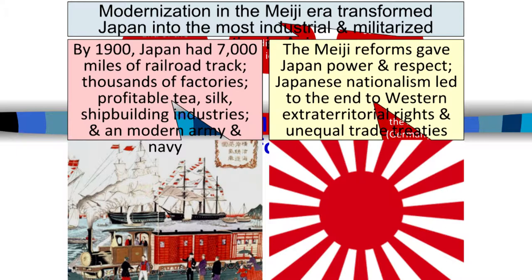They were doing really well compared to the rest of Europe, but they did it way faster — they were 200 years behind the rest of the world and caught up in about 50 years. The speed and efficiency of the Meiji reforms gained Japan a lot of power and respect, along with a strong sense of Japanese nationalism. That led to the end of Western extraterritorial rights and unequal trade treaties. Unlike the rest of Asia, Japan became so advanced so fast that they gained enough respect that they weren't conquered as easily as the Chinese — the Europeans basically left them alone.